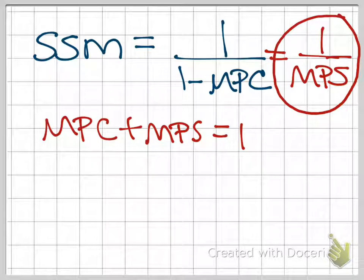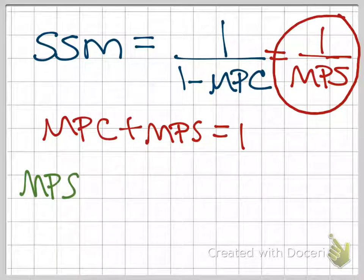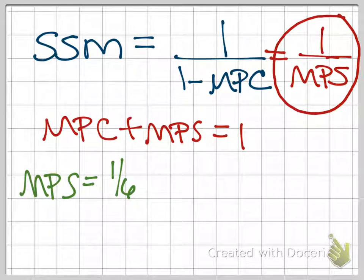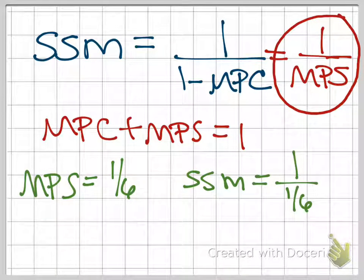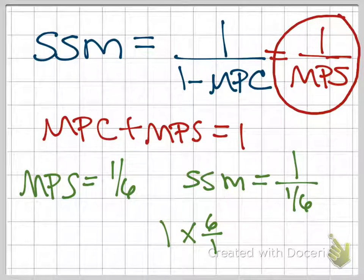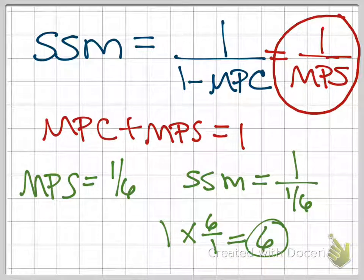Let me show you just really quickly here. It's really easy to go from the MPS to your multiplier. So let's say you're told that the MPS is 1/6. 1/6 of all new income is saved. Plugging in, we'll say our multiplier is 1 divided by 1/6. If you remember anything about fractions, if we're going to divide by a fraction, we multiply by the reciprocal. What is a reciprocal? You simply invert or flip your fraction. So our multiplier would be 6. So again, if the MPS is 1/6, our multiplier is 6. Very straightforward.